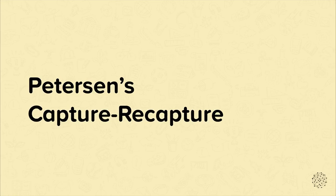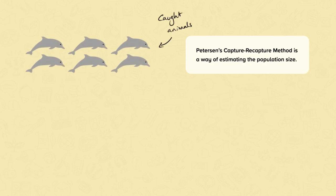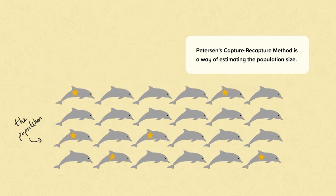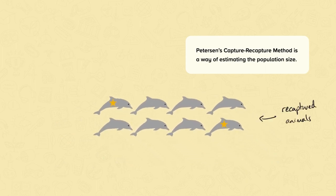Peterson's capture-recapture method is a way of estimating the population size. Some animals are caught and marked, then released to randomly integrate with the population. Some of the animals are then recaptured. The proportion of marked animals in the recaptured sample is the same as the proportion of marked animals in the total population, which allows you to make an estimate of the population size.